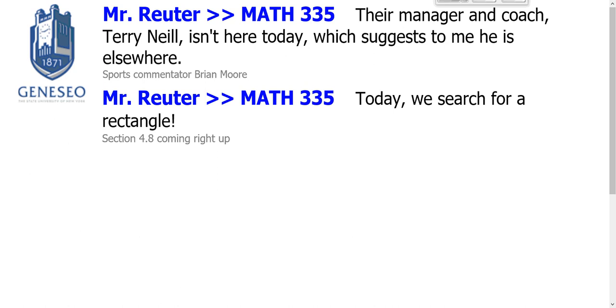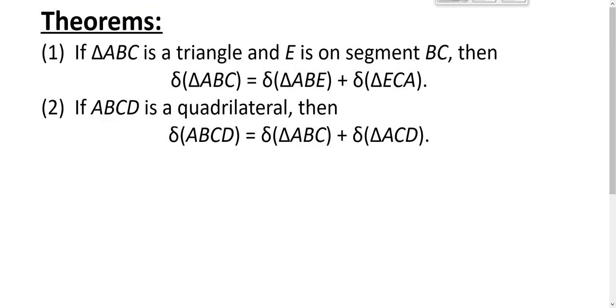Well, in this screencast we begin the search for a rectangle in neutral geometry, but we do it by talking about this thing called defects. So when we say the defect of triangle ABC, that's a lowercase delta.